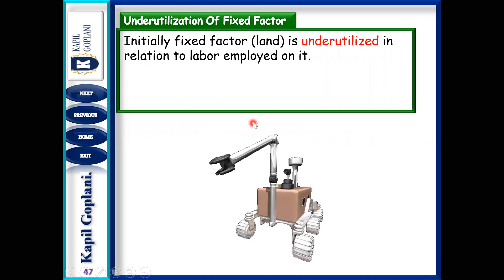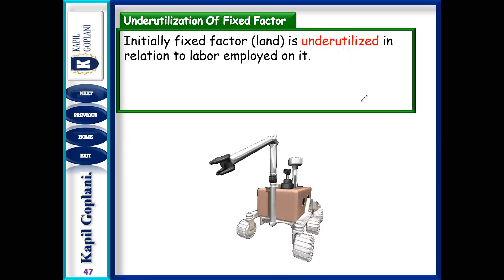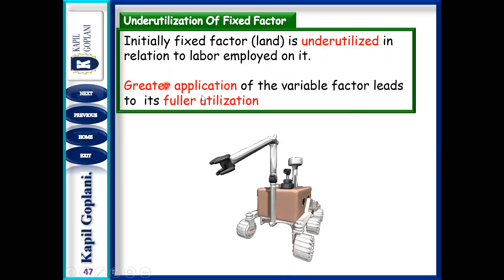The second cause is under-utilization of fixed factor. Initially when there was only one farmer, it was very low because one farmer is not able to fully utilize that farmland — that is under-utilization. As more farmers come, the fixed factor is better utilized, and that is why MP increases. Greater application of the variable factor leads to fuller utilization of the fixed factor.